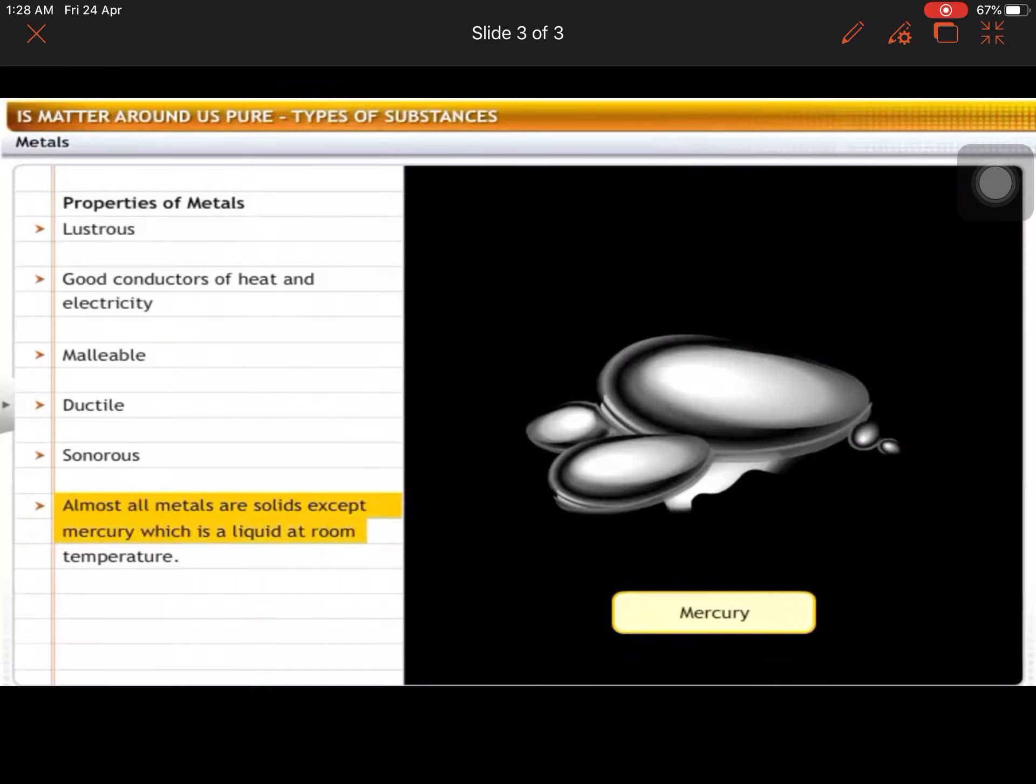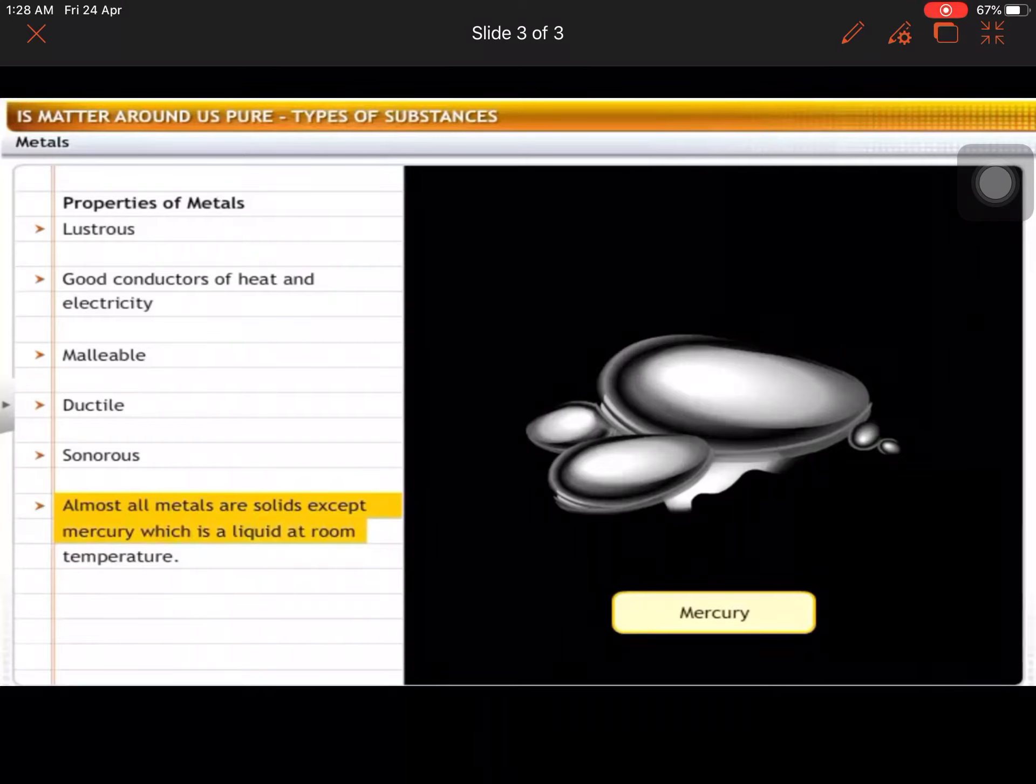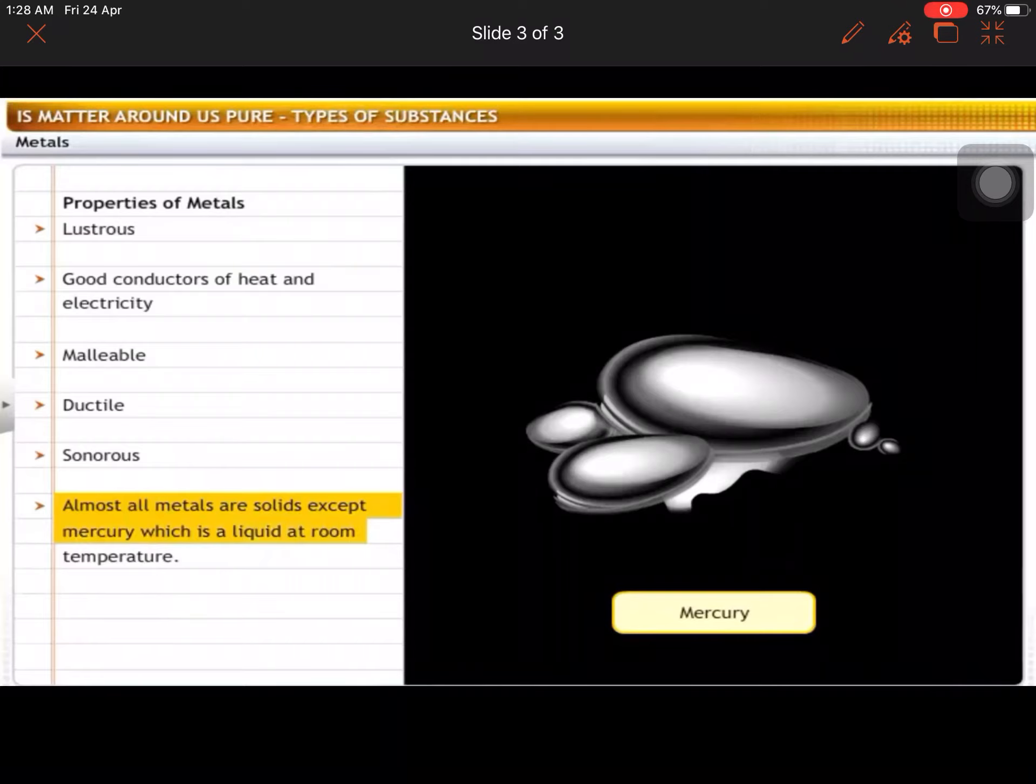Almost all metals are solids except mercury, which is a liquid at room temperature. Remember, all metals are in solid form. Mercury is the only one that is in semi-metallic or liquid form, though we call it a semi-metal. Now let's see the opposite - we'll look at non-metals.